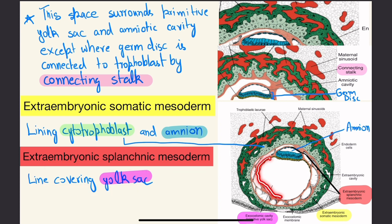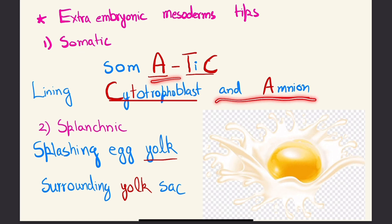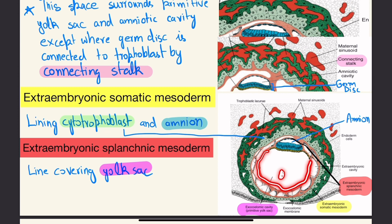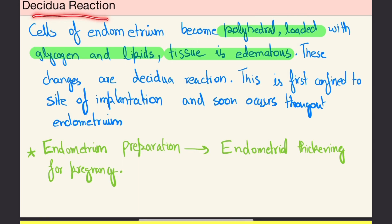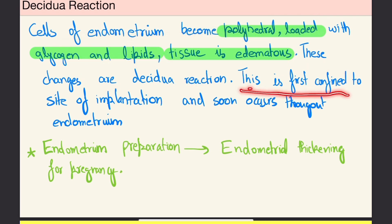Tips to remember: for somatic mesoderm, spelling S-O-M-A-T-I-C: 'C' for cytotrophoblast lining and 'A' for amnion cavity lining. For splanchnic mesoderm, the mnemonic is 'splashing egg yolk' — it surrounds the yolk sac. The decidual reaction is essentially endometrial preparation for pregnancy: endometrial thickening, cells become polyhedral, loaded with glycogen and lipid, and tissue becomes edematous. These changes are initially confined to the site of implantation and soon occur throughout the endometrium.